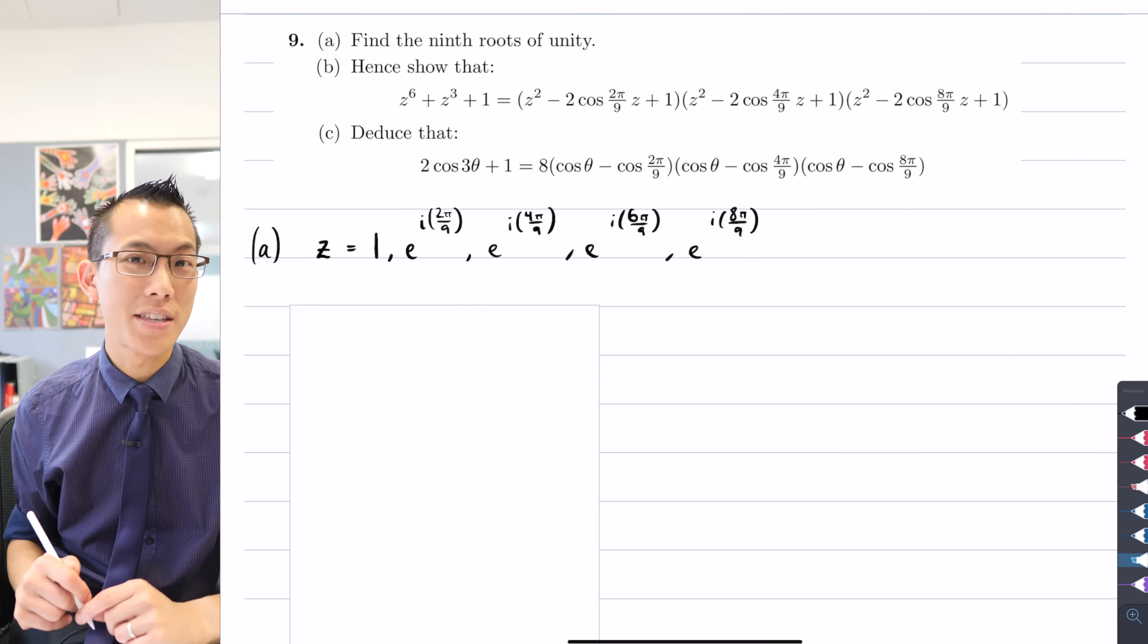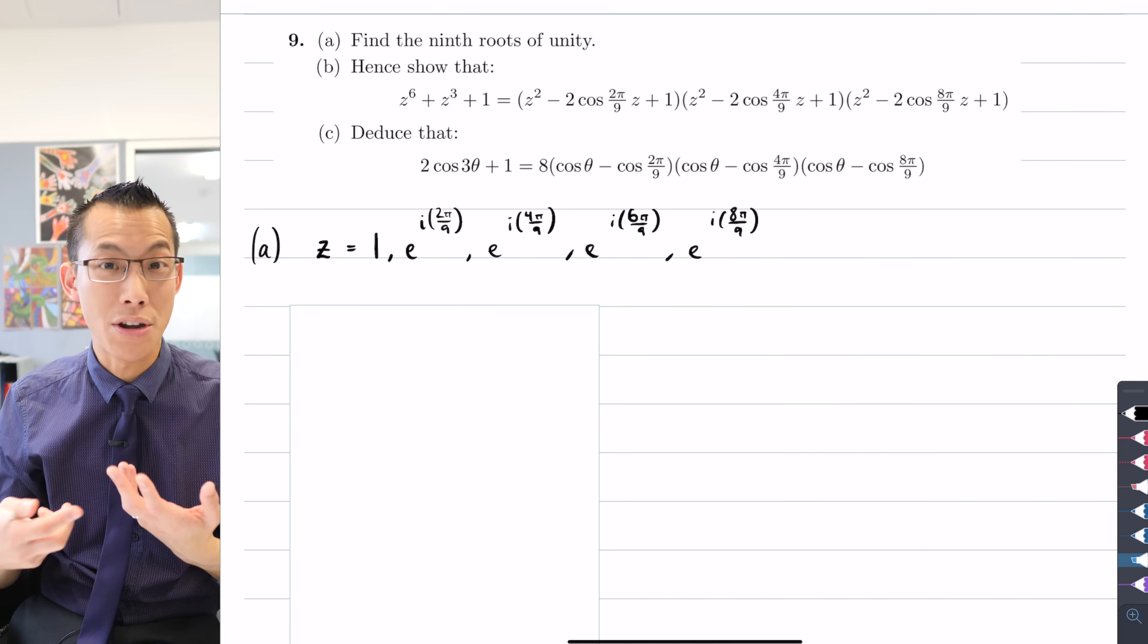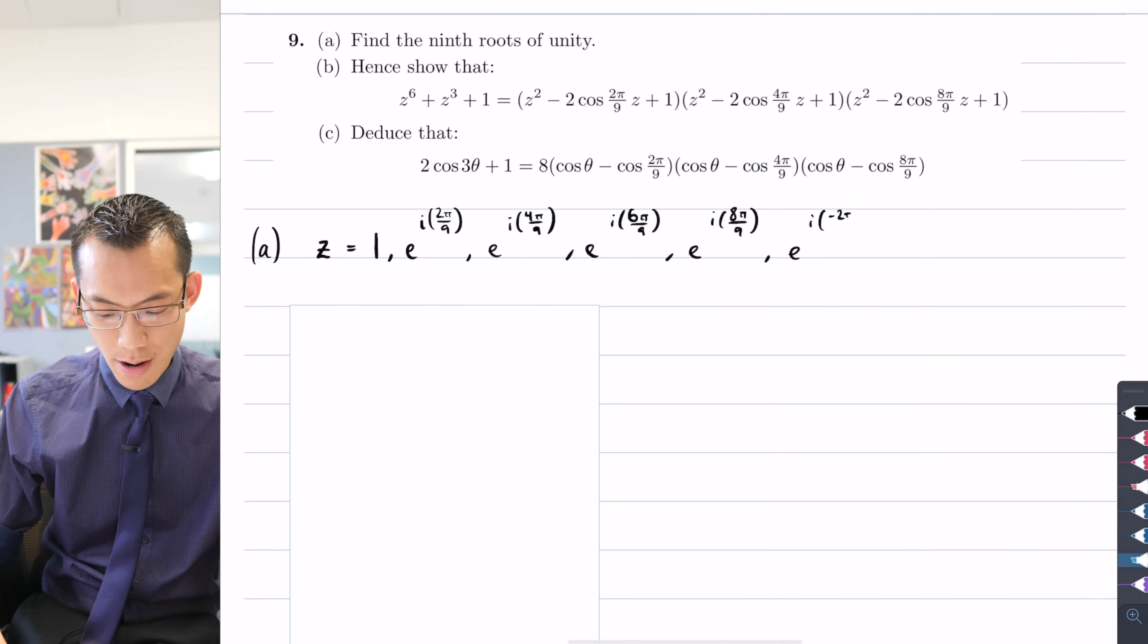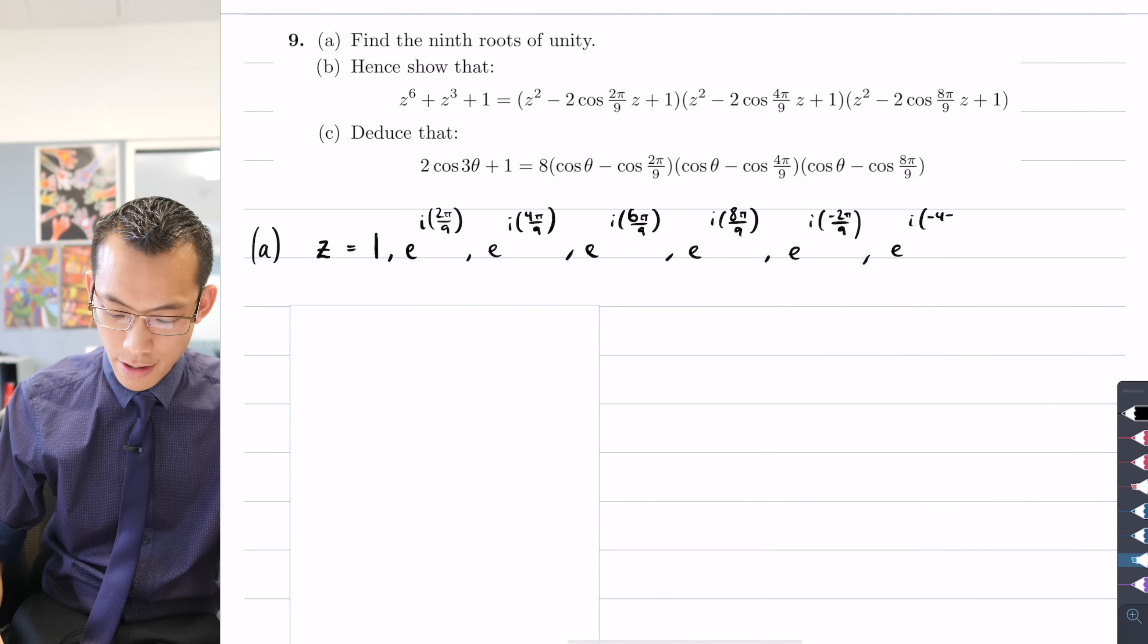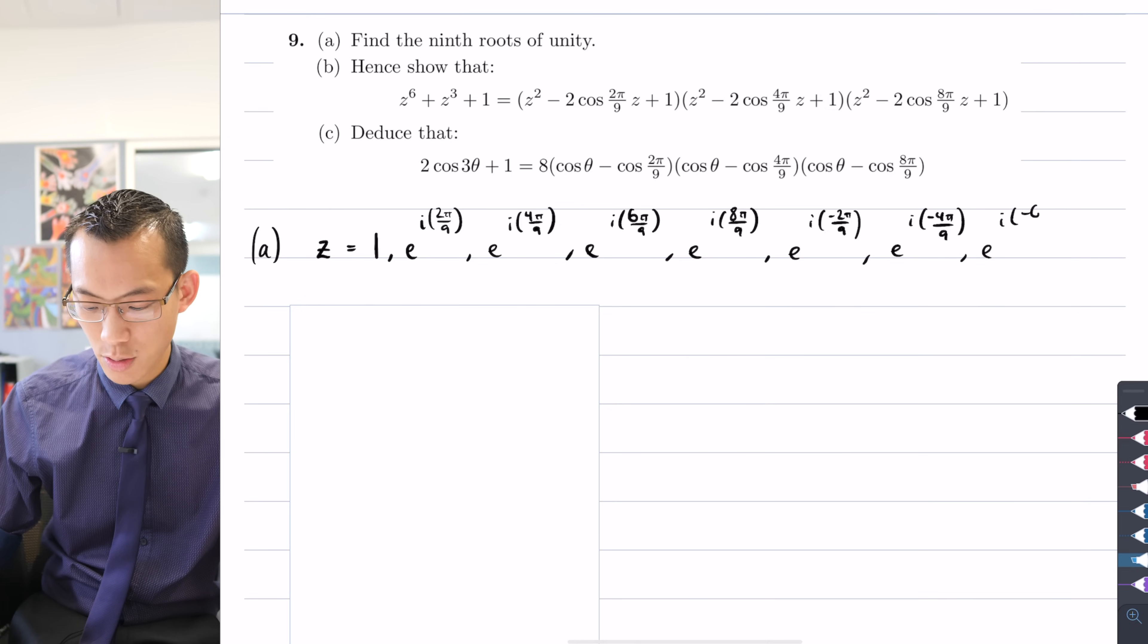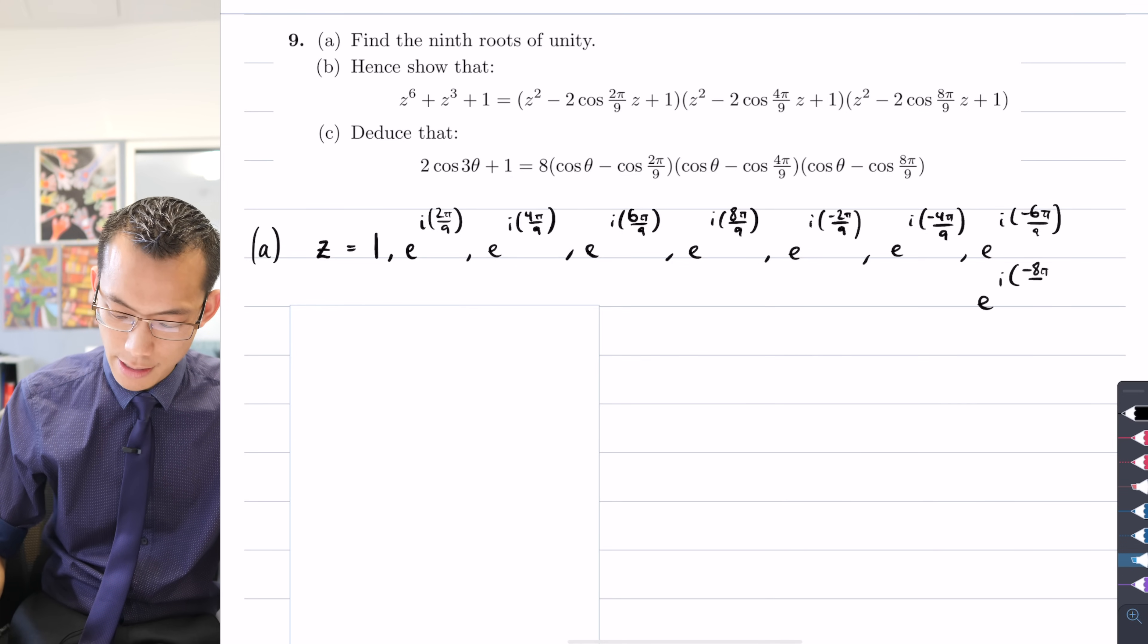So as I said before, instead of continuing around anti-clockwise, we're now going to start from 1, which is an argument of 0, and go clockwise, which will give me negative arguments. So it's going to give me, in order, clockwise, I'll get e^(i negative 2π/9). I'm going to get e^(i negative 4π/9). And it's really just going to be the same numbers that I got before, just negative instead of positive. So I can squeeze negative 6π/9 just there. And I reckon I can tuck negative 8π/9 underneath.